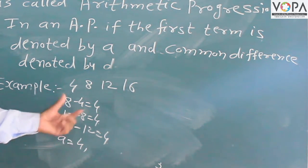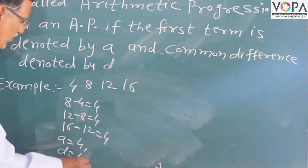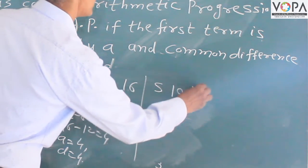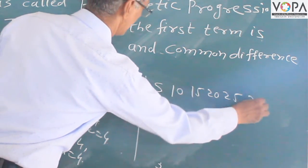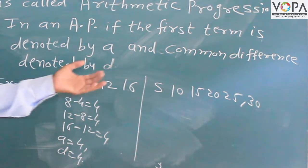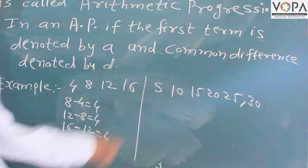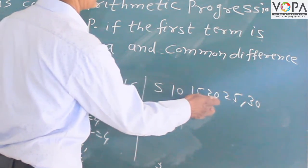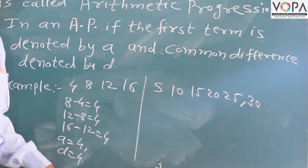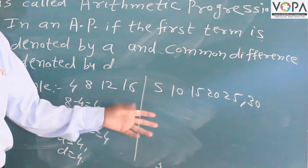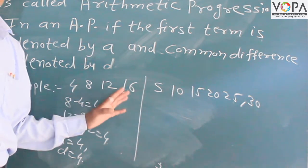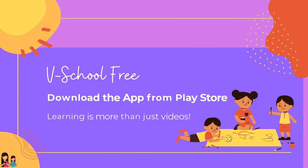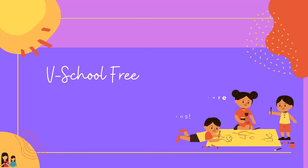Many examples of the sequence: 5, 10, 15, 20, 25, 30. The difference between two consecutive terms is constant: 10 minus 5 is 5, 20 minus 15 is 5, 25 minus 20 is 5, 30 minus 25 is 5. Therefore the first term a is equal to 5 and the common difference d is equal to 5. Thank you.